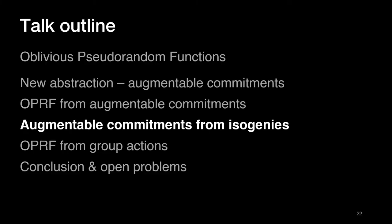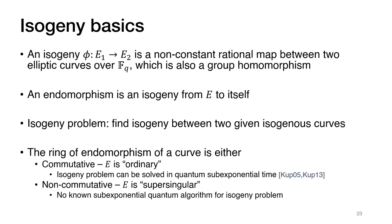The next thing we'll see is how to construct augmentable commitments from isogenies. An isogeny is a non-constant rational map between two elliptic curves over some finite field, and also a group homomorphism between the groups of points on each curve. An endomorphism is just an isogeny from a curve to itself. The fundamental hard problem underlying isogeny-based crypto is finding an isogeny between two given isogenous curves. Elliptic curves are classified by whether their endomorphism ring is commutative (ordinary) or non-commutative (supersingular).